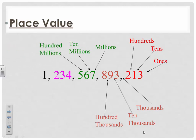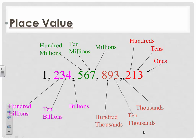Feel free to stop and pause so you can catch up with the writing. The next group is the billions, so we're going to call the first one the billions place, then ten billions, hundred billions. Following billions we're going to go trillions, and you could keep going from there — ten trillions, hundred trillions — and then up to the next one, which would be quadrillions. You can keep doing that.